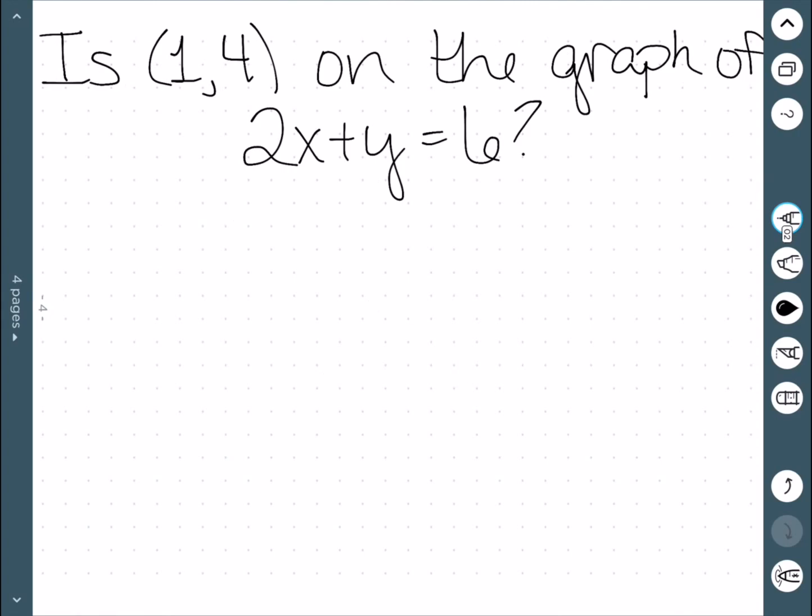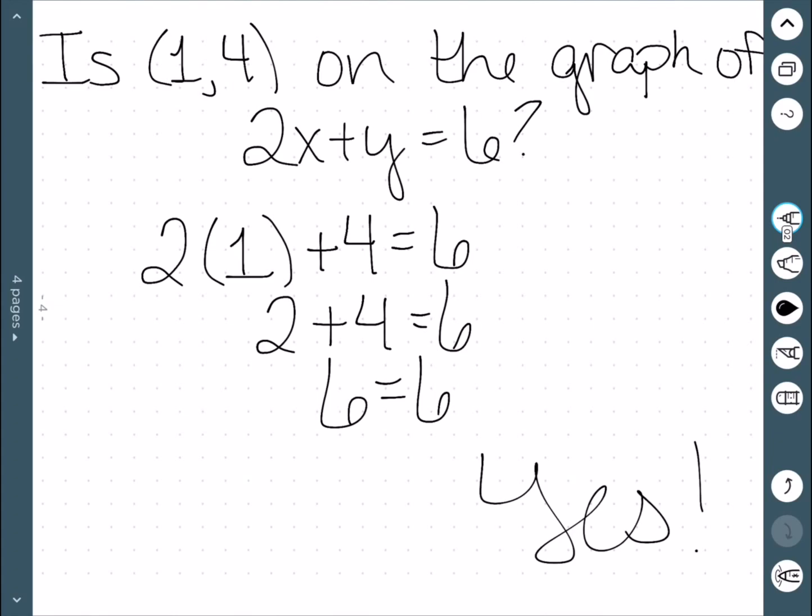The next one is (1, 4) on the graph of 2x plus y equal to 6. This time, x is 1, and y is 4. I get 2 plus 4, which is 6, so our equation is satisfied. Therefore, yes, this point is on the graph.